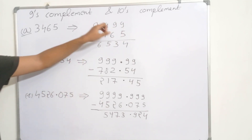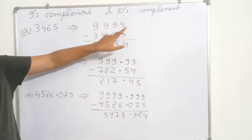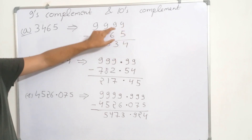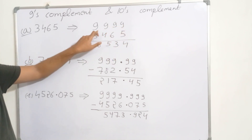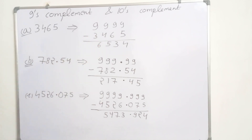So, 9999 minus 3465. 9 minus 5 is 4, 9 minus 6 is 3, 9 minus 4 is 5, and 9 minus 3 is 6. So the 9's complement is 6543.